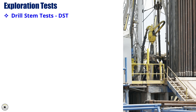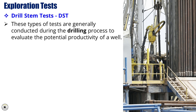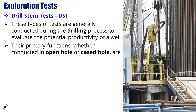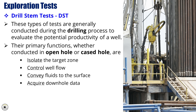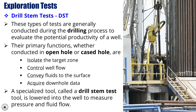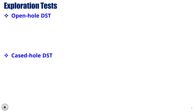Exploration tests. Drill stem tests (DSTs) are generally conducted during the drilling process to evaluate the potential productivity of a well. The primary functions of DSTs, whether conducted in open hole or cased hole, are to isolate the target zone, control the well flow, convey fluids to the surface, and acquire downhole data. A specialized tool called a drill stem test tool is lowered into the well to measure pressure and fluid flow. Open hole DST and cased hole DST are key well testing methods used to assess reservoir properties during different stages of drilling and completion, providing crucial insights into the presence and quality of hydrocarbons.